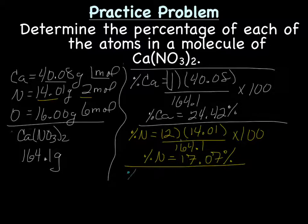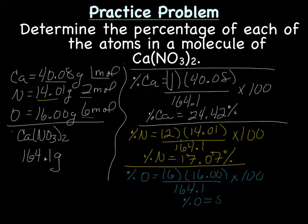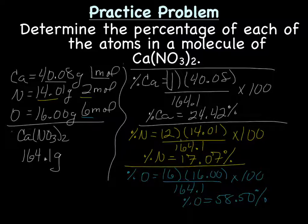And last is percent oxygen. So, we have six moles times the molar mass of oxygen divided by the molar mass of calcium nitrate times 100, and that gives us percent oxygen with four sig figs is 58.50 percent. Now, again, I would double check to make sure these add up to just about 100, and that should be it. So, the percent mass of calcium is 24.42 percent. Percent mass of nitrogen is 17.07 percent, and the percent mass of oxygen is 58.50 percent. So, hopefully, you don't see this as being too bad.